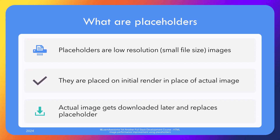So how are they used? When a page starts to render and the browser sees an image tag, instead of our regular image, we give the browser a placeholder image to render or display to the user instead. The main image is downloaded in the background. When the final image is fully downloaded and ready to be displayed, we replace the placeholder with the actual image.